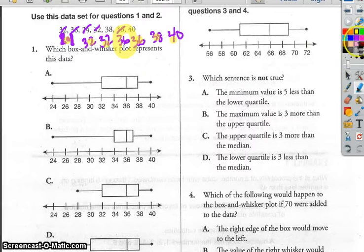Then I need to find the lower quartile, and that's going to be 32. You got these two on the end. And then upper quartile, 38. And then we've got our extremes. They're going to be 24 and 40.